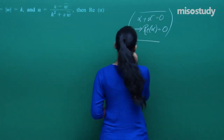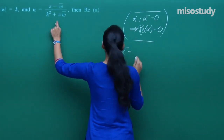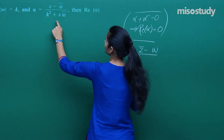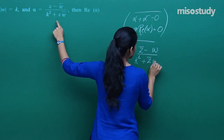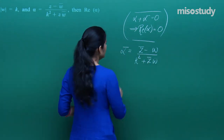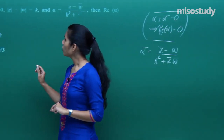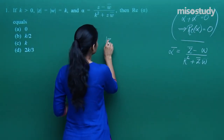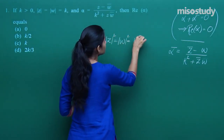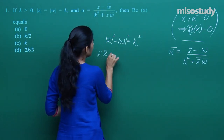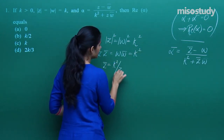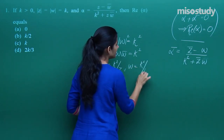Keeping this in mind, if I consider ᾱ: if alpha is this, then ᾱ is (z̄ minus w̄'s conjugate, which is w) upon (k² bar, which is k² plus z̄w̄'s conjugate, which is w). Now, it is given that |z| = |w| = k. This means |z|² = |w|² = k², which is zz̄ = ww̄ = k².